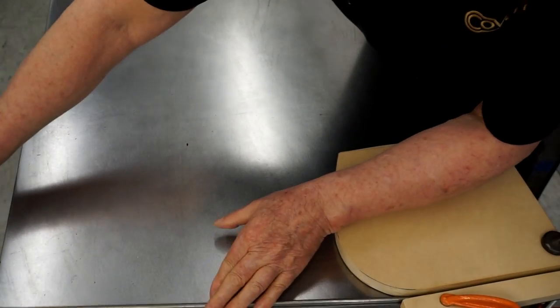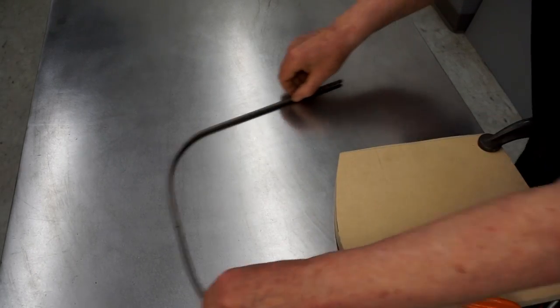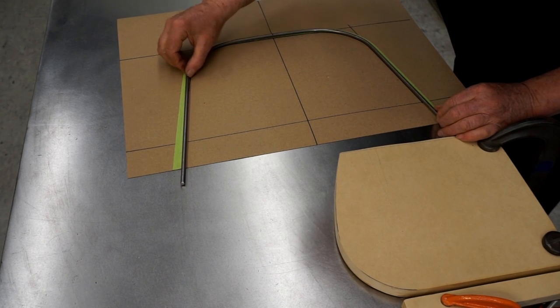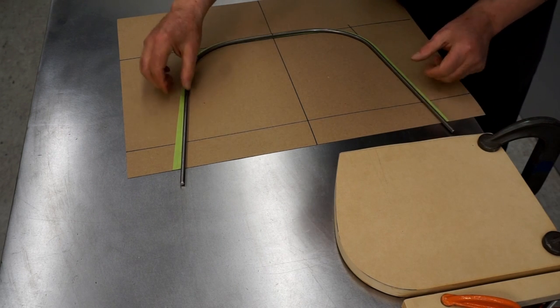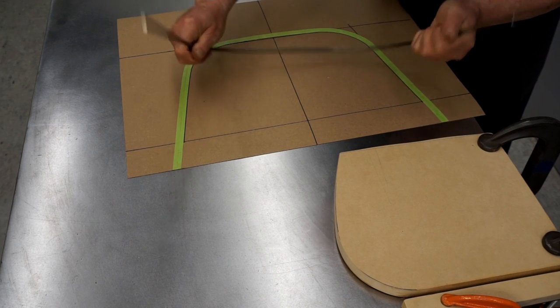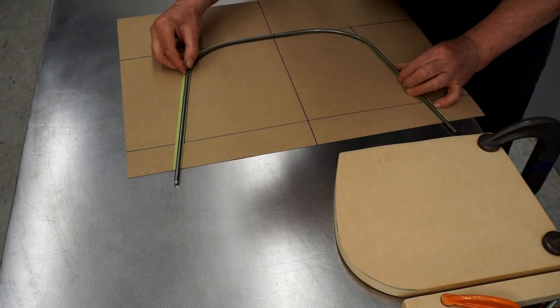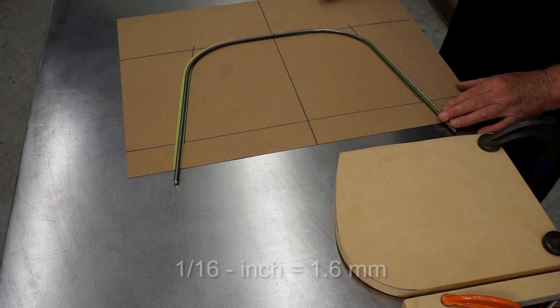Now we'll make the second bend. And we'll try this on the pattern. And by gosh, that is just about perfect. Looks like it's closed in a little bit more than I wanted, so I'm going to open this up by hand just a tiny bit. And that is within a sixteenth of an inch of our pattern. That's good enough for a dustpan.